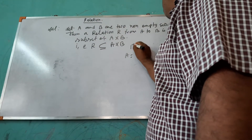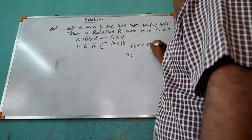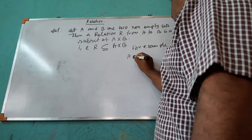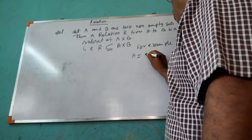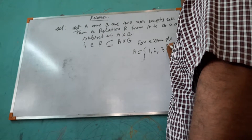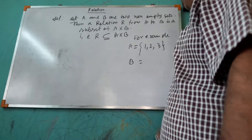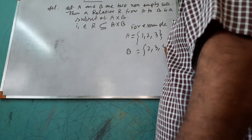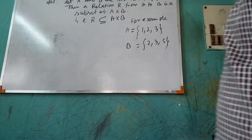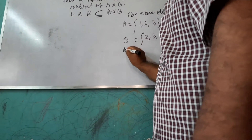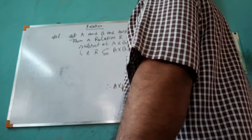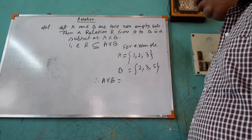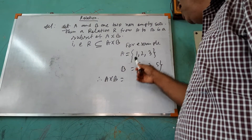Suppose A equal to {1, 2, 3} and B equal to {2, 3, 5}. Now, what is A cross B? A cross B — that is the Cartesian product of the two sets.